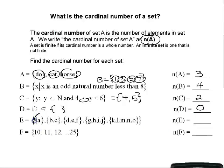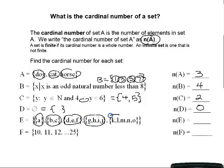Set E is a set whose elements are themselves sets. Set E contains: {A}, {B, C}, {D, E, F}, {G, H, I, J}, and {K, L, M, N, O}. Counting those members, set E has 1, 2, 3, 4, 5 elements, so the cardinal number of set E is 5.